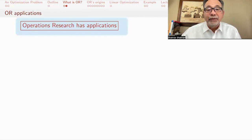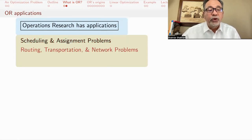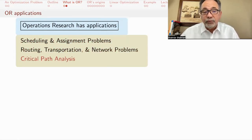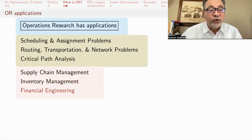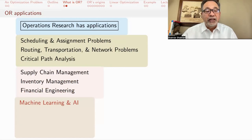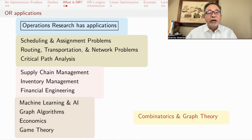Operations research has many applications. Some of these are schedule and assignment problems like the example that I showed you, routing, transportation and network problems, critical path analysis, supply chain management, inventory management, financial engineering, machine learning and artificial intelligence, graph algorithms, economics, game theory. It also has applications in pure mathematics, in combinatorics and graph theory. In fact, that's why I'm interested in it. I do combinatorics for a living and I got interested in linear programming because you can use linear programming techniques to prove theorems in math.